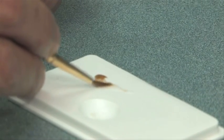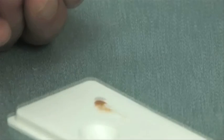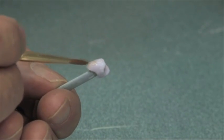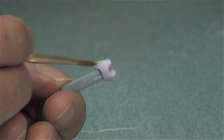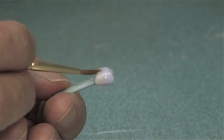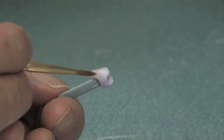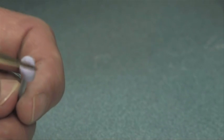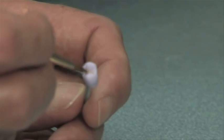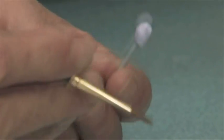We finished placing the glaze on the crown and now we're going to add just a little bit of coloration, or what we call stain, at the cervical or gum line area to mimic the natural coloration of a tooth as it gets a little bit darker close to the gum line. We'll place just a little bit in the central groove to make that look natural.